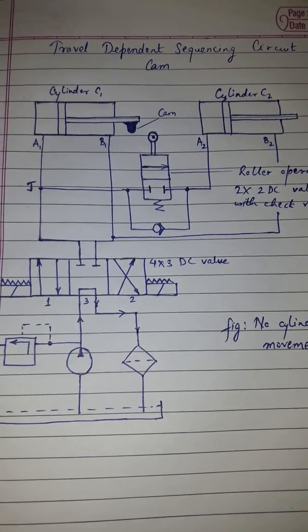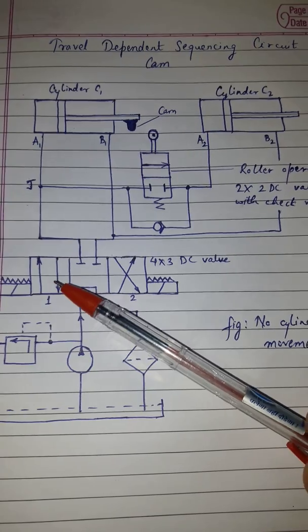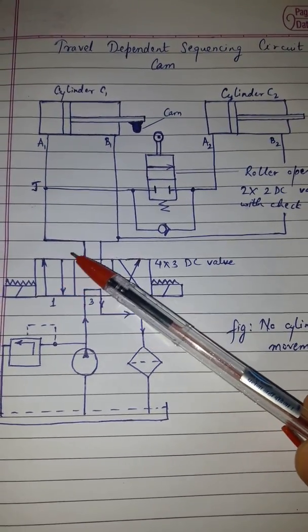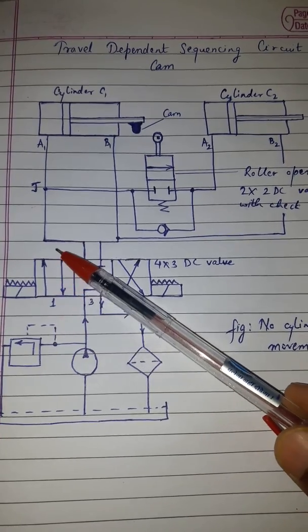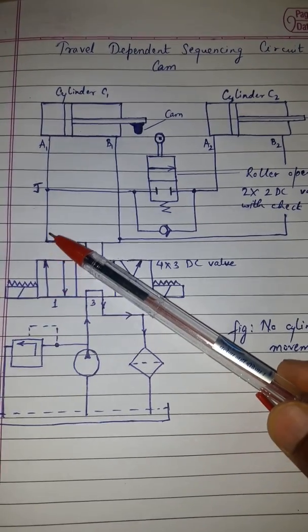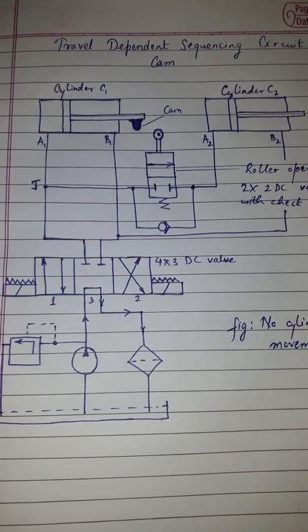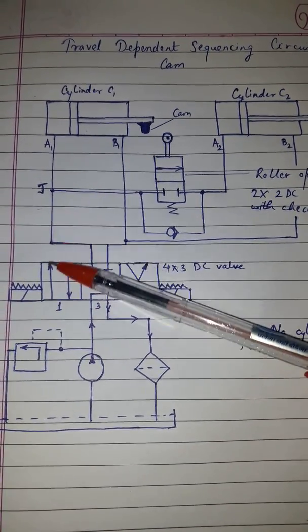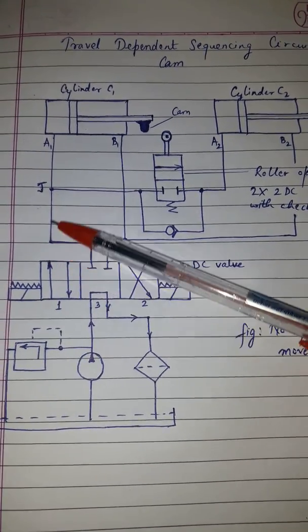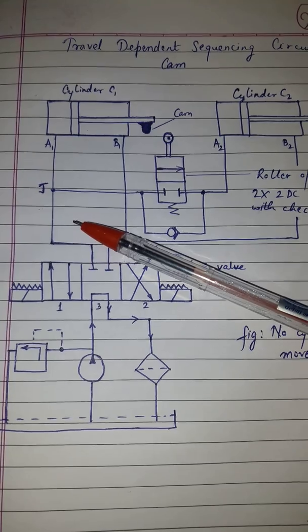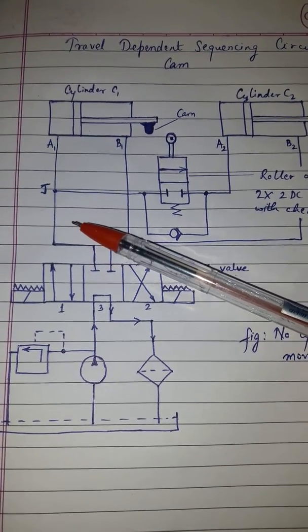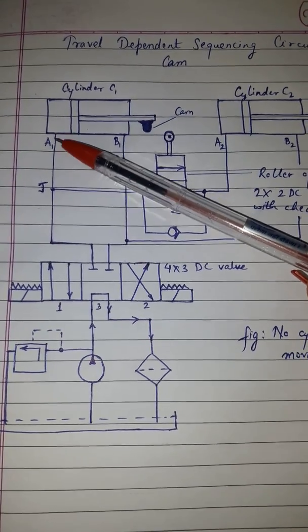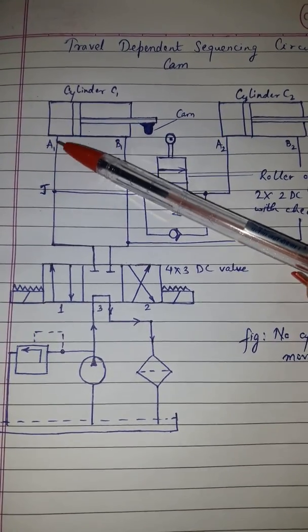Now the DC valve takes position 1, so the connection will be made from here and then it will get joined here. The oil will start flowing towards junction J. At this junction, the flow divides — some oil enters cylinder C1 through port A1.